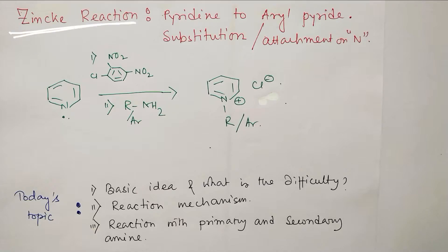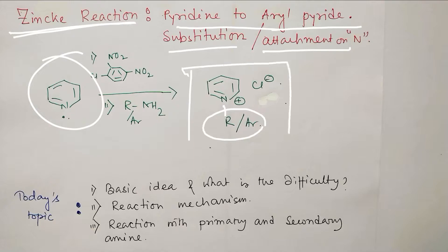This Zincke reaction is about the pyridine to aryl pyridine, or substituted pyridine to substituted pyridine, where the substituent got attached to the nitrogen. Ultimately the aryl or aliphatic group, meaning aromatic or aliphatic group, attached to this pyridine and forms a cationic species from a neutral species. Obviously, it's better to say it's salt preparation.